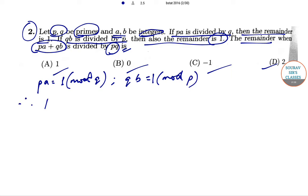So basically we can write now that PA minus 1 will be some multiple Q into L, where L is some integer, and also we can write that QB minus 1 will be equal to PK, where K is some integer.